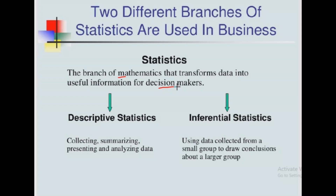In statistics there are two types of branches. The first one is descriptive statistics and the second one is inferential statistics. Under descriptive statistics, we use this type to collect data, summarize data, present data, and analyze data in a descriptive way.